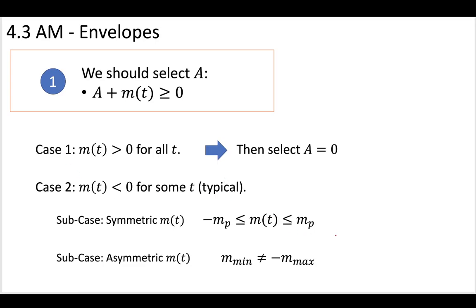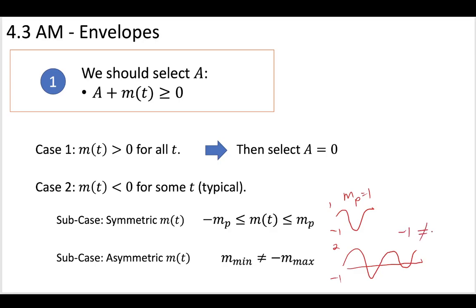The first sub-case is symmetric — like a cosine wave that goes from positive one to minus one, bouncing back and forth equally. The message stays between some value mp and minus mp, where mp equals one in this example. However, you could also have an asymmetric case where your message goes really high but not really low — say, up to two but only down to minus one. In that case, the minimum is not equal to the negative of the maximum: minus one is not equal to minus two.